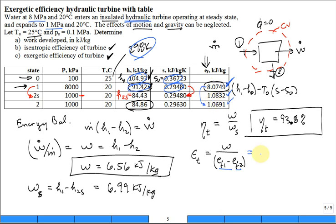When we calculate the second law efficiency, we get 93.6 percent. Which one is better — the isentropic efficiency or the exergetic efficiency? Neither is inherently better; they are simply different measures.